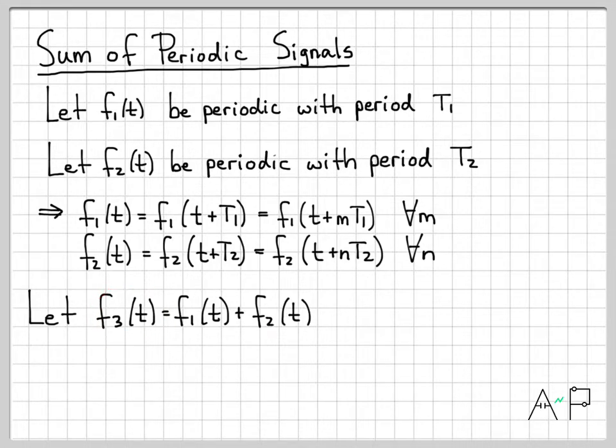I'm now going to create a new signal f3(t) that is the sum of f1(t) and f2(t), and the question we're interested in is: is this a periodic signal? Is f3(t) periodic? Because f1(t) is periodic and f2(t) is periodic, we know that can happen.